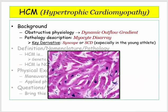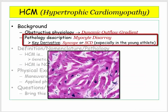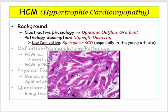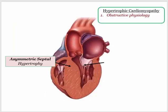After our initial review of the obstructive physiology, we'll launch into a discussion of the cardiac pathology described by myocyte disarray, which is the second characteristic feature of this disorder. So with that introduction, let's get started.